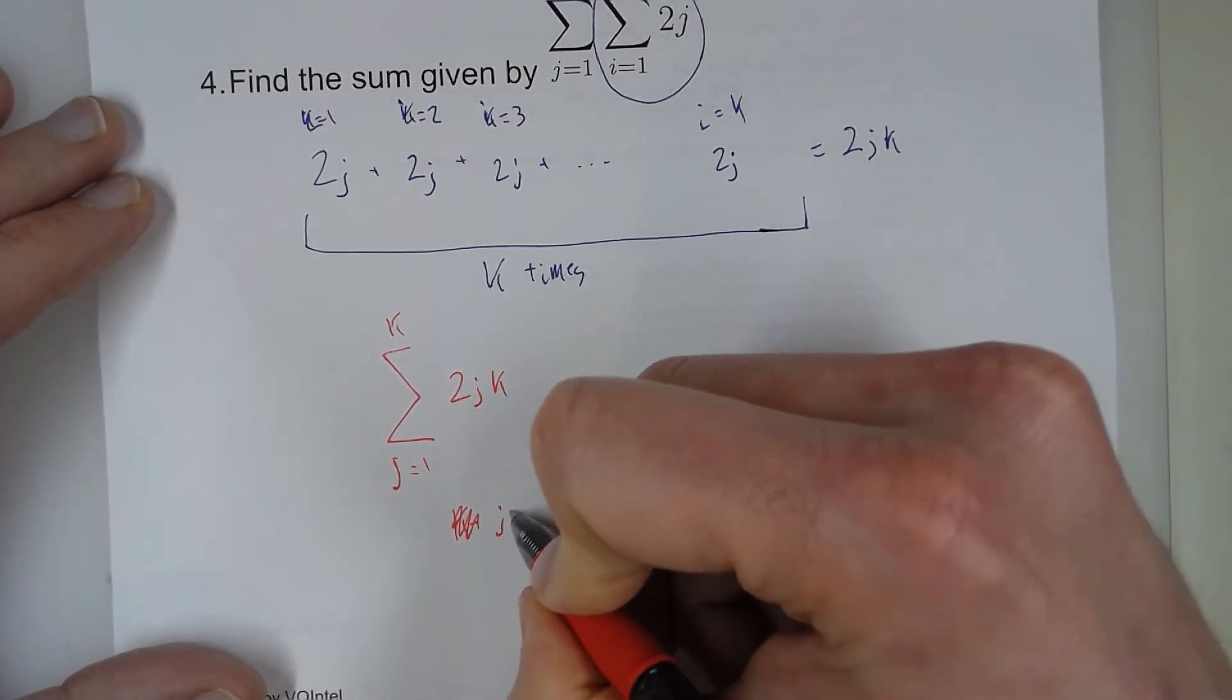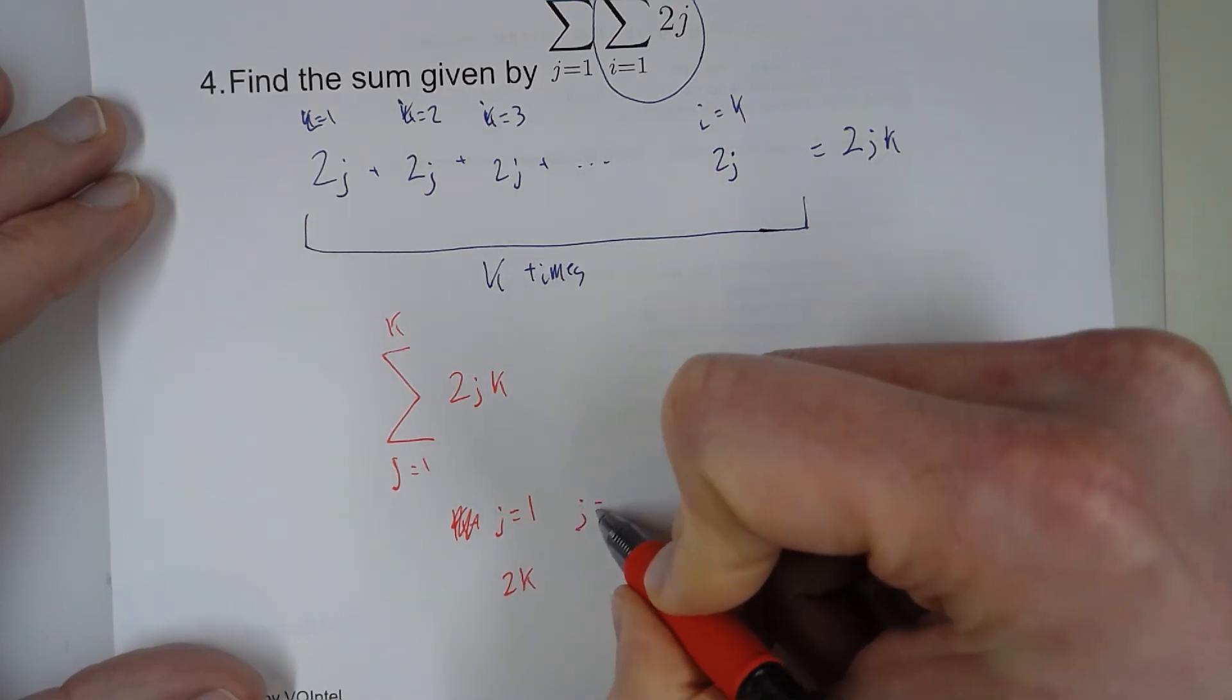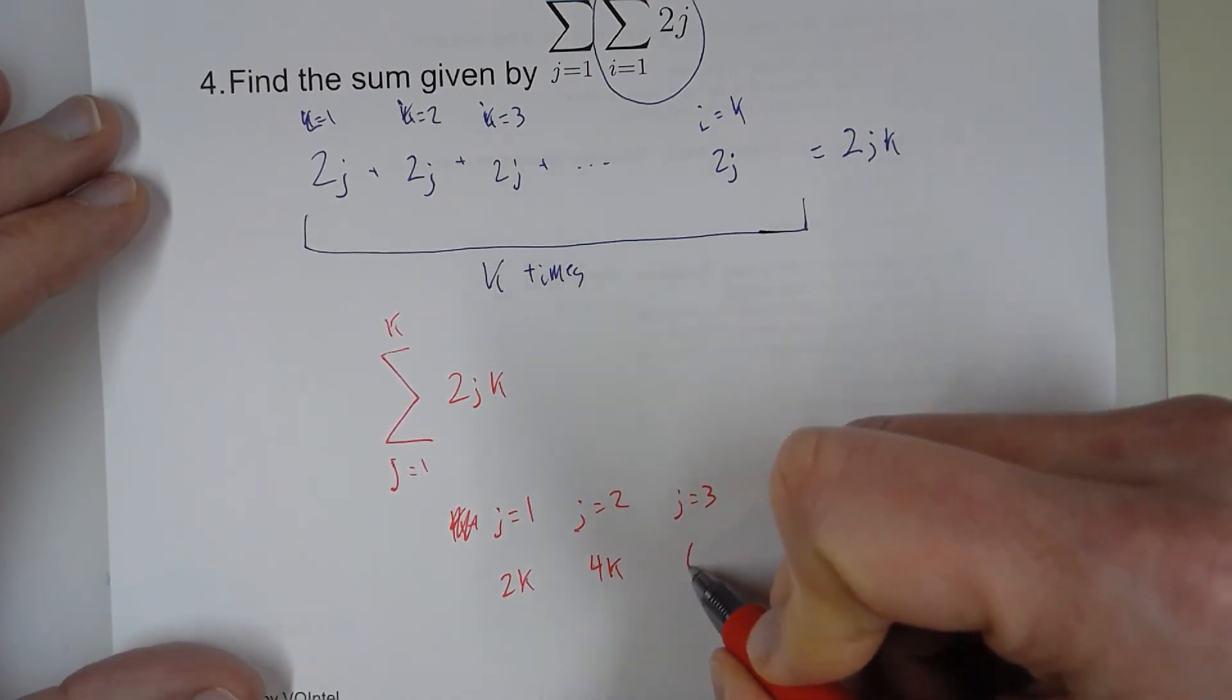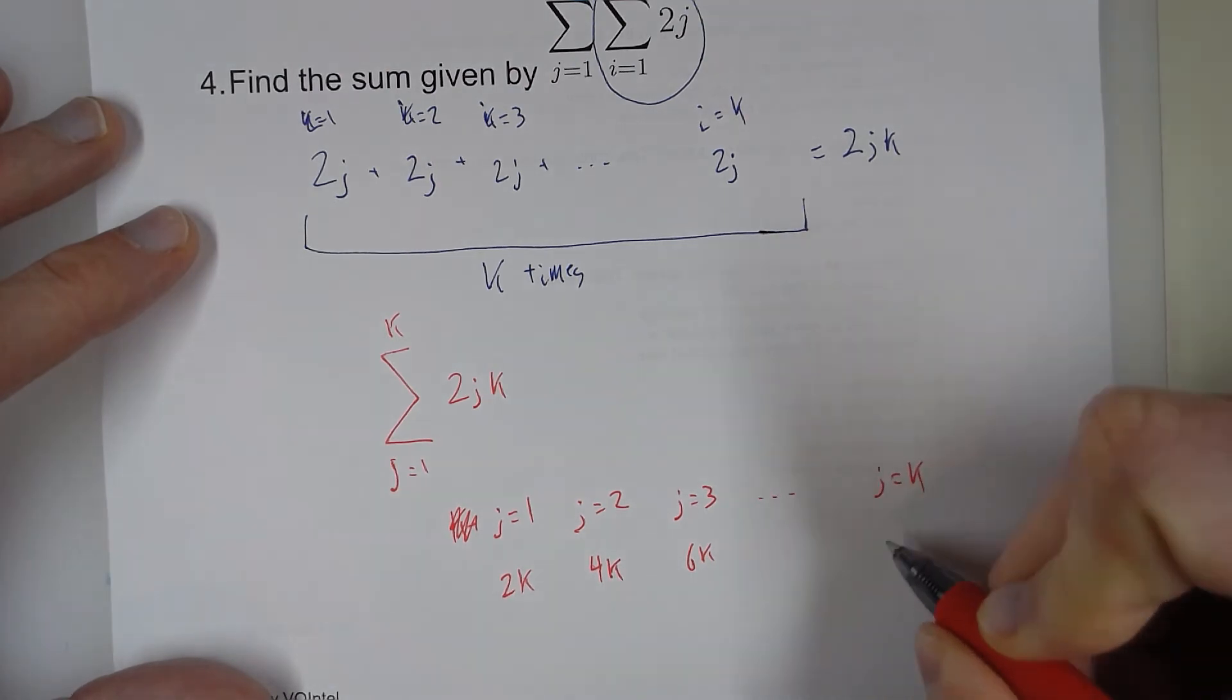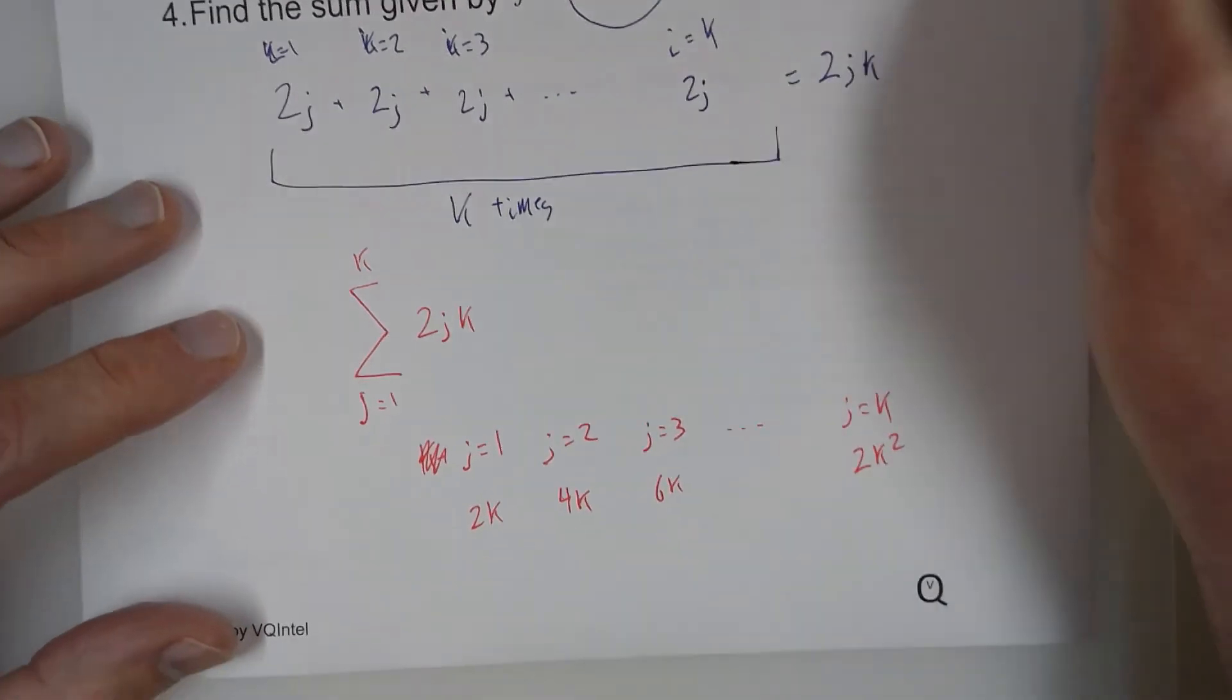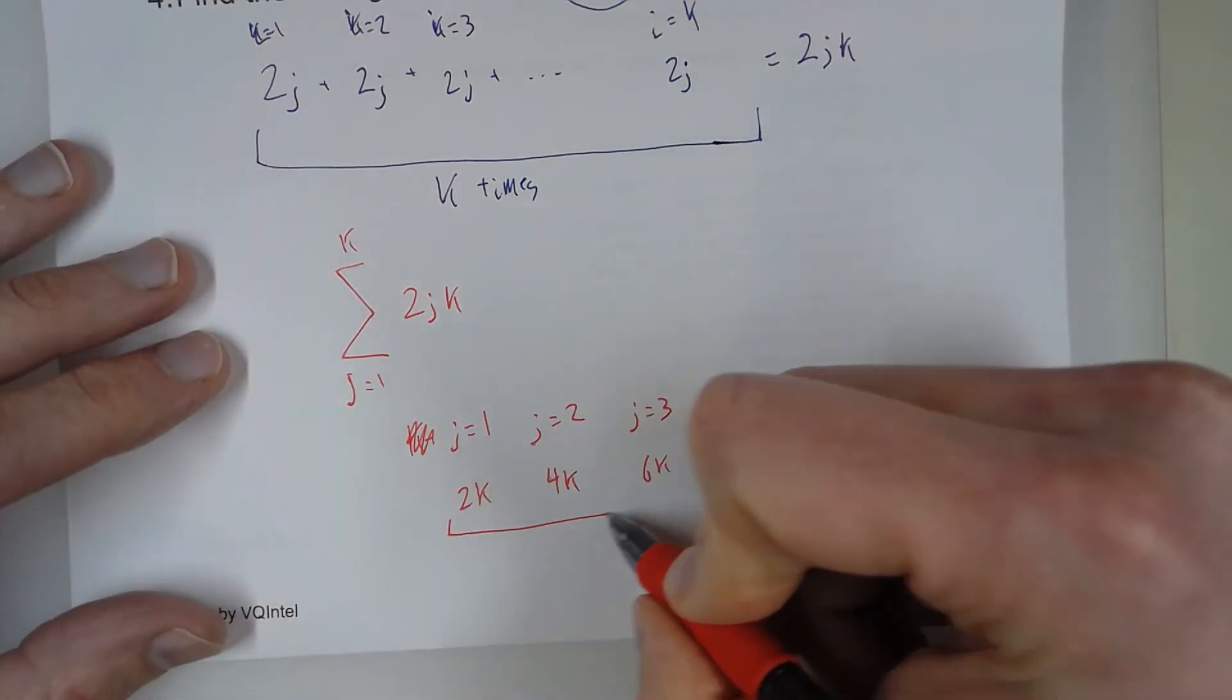So when j equals 1, the term is 2k. When j equals 2, the term is 4k. When j equals 3, the term is 6k. And when j equals k, we get 2k squared. So looking at this, we have 2k, 4k, 6k. So this is an arithmetic series.